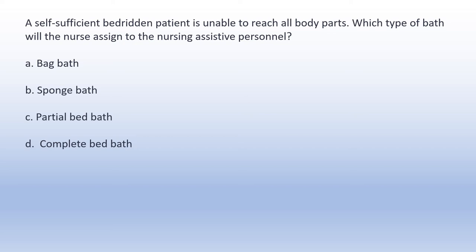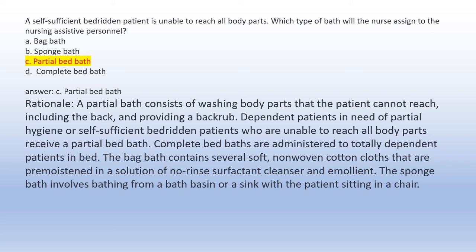A self-sufficient bedridden patient is unable to reach all body parts. Which type of bath will the nurse assign to the nursing assistive personnel? A. Bag bath. B. Sponge bath. C. Partial bed bath. D. Complete bed bath. Answer C: Partial bed bath. Rationale: A partial bath consists of washing body parts that the patient cannot reach, including the back, and providing a back rub. Complete bed baths are administered to totally dependent patients. The bag bath uses pre-moistened no-rinse cloths. The sponge bath involves bathing from a basin or sink with the patient in a chair.